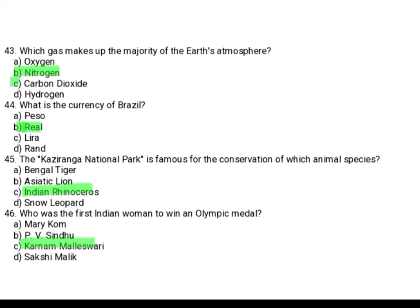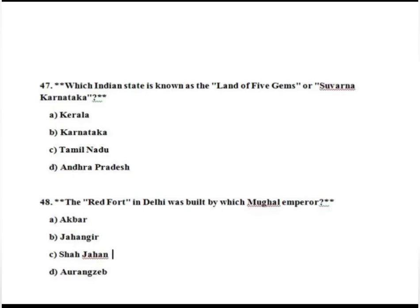Which Indian state is known as the land of five gems or Swarna Karnataka? Option A: Kerala. Option B: Karnataka. Option C: Tamil Nadu. Option D: Andhra Pradesh. The correct answer is Option B, Karnataka.